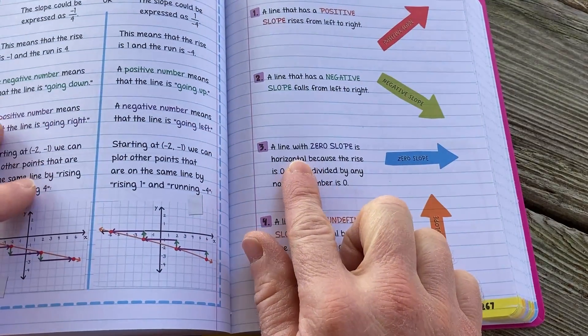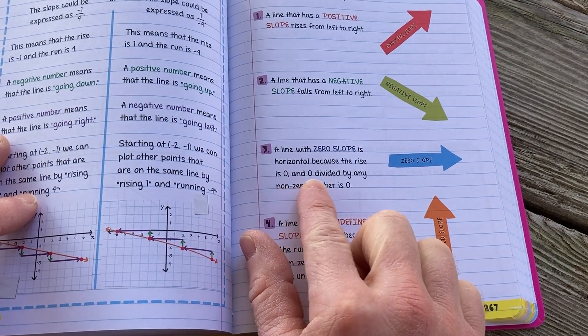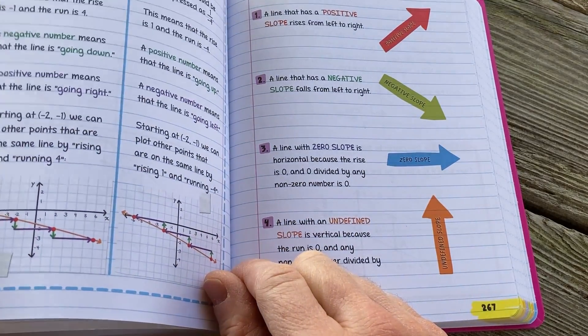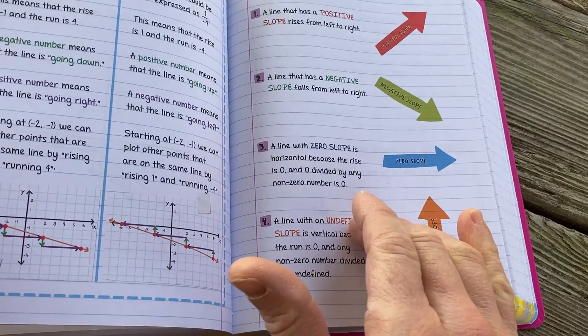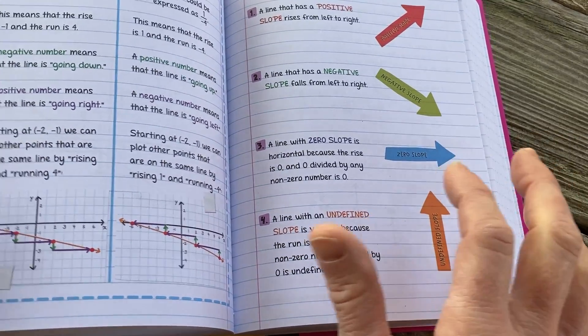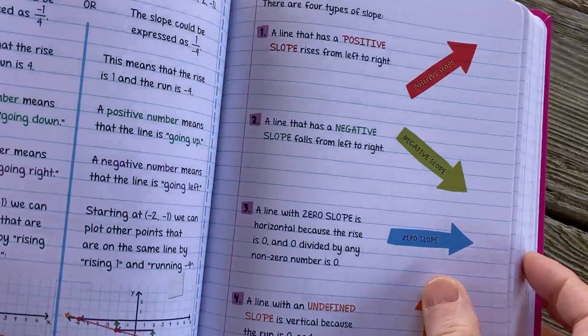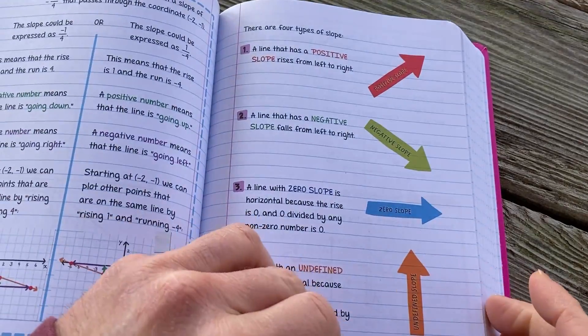This one's important too. A line with zero slope is horizontal because the rise is zero, and zero divided by any number is zero. So whenever you have a horizontal line, the slope is zero. Remember it's rise over run. You're not rising anywhere, so it's zero over run, which is going to be zero as long as your run is non-zero, which is going to be the case. And then positive slope rises, negative slope it falls. So pretty cool. Pretty good.